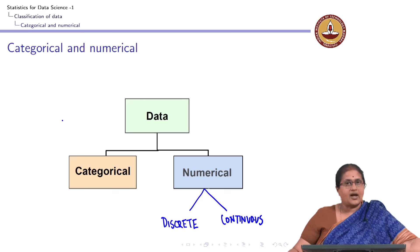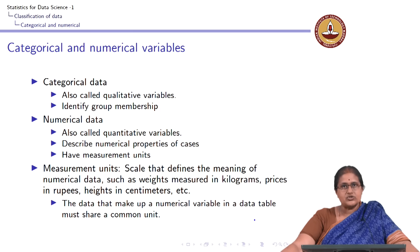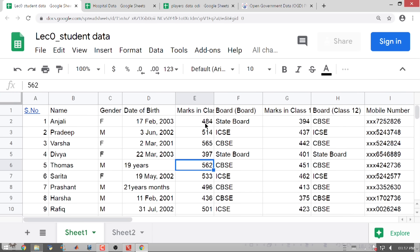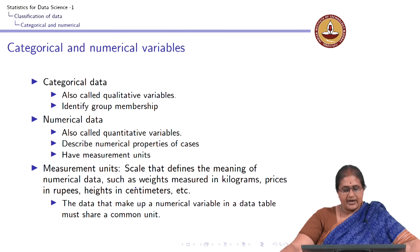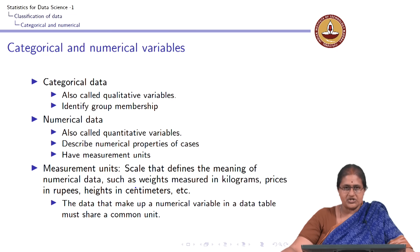Once we understand categorical and numerical data, we need to understand the measurement units used for numerical data. Height is measured in centimeters, weight in kilograms, body temperature in degree Fahrenheit. Marks are in marks, matches played in count, highest score in runs, wickets taken in wickets. The key idea is that when you have numerical data, the variable must be measured consistently across all observations and share a common unit.